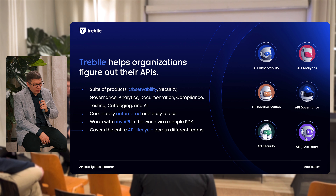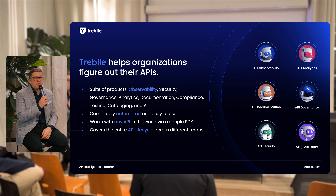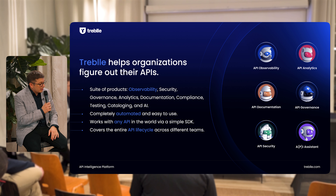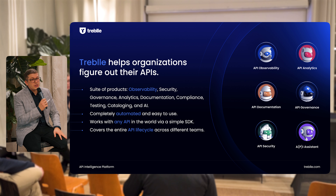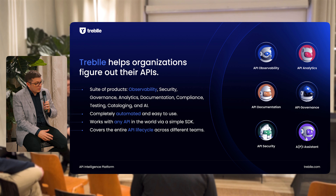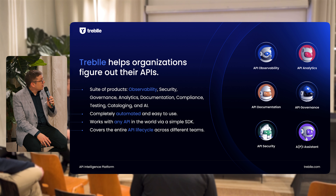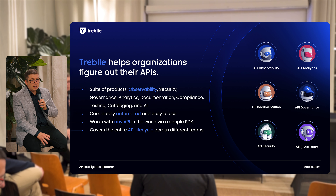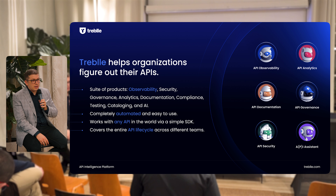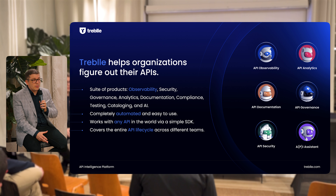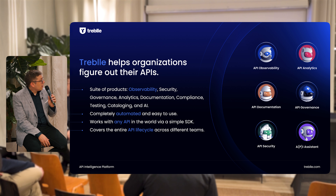At Treble we like to say that we help organizations figure out their APIs. We've got a suite of products covering everything from observability, security, governance, compliance, AI cataloging — basically everything you need except the gateway to run everything you're doing on your API. Everything is completely automated and easy to use. You can get started on any API in the world just by dropping in an SDK through a code integration or a gateway integration with our partners. We essentially cover everything across the API lifecycle — from automatically generated documentation to developer portals to observability to governance, all in one spot.